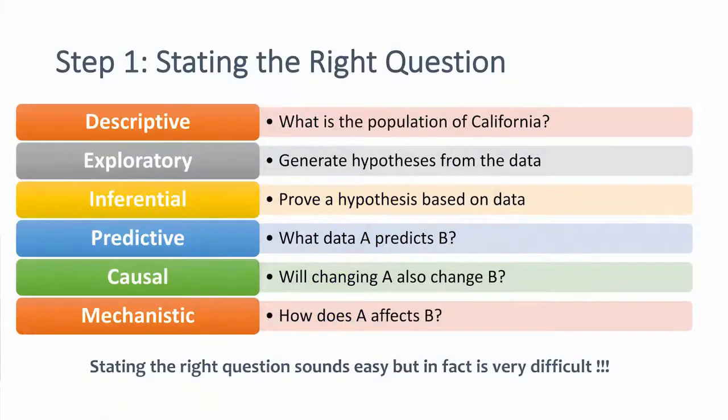The first step is stating the right question. Descriptive: what is the population of California? Exploratory: generate hypotheses from data — for example, the height of a basketball player is related to success; if he's six feet and above, he will most likely be very successful. Then you prove a hypothesis based on the data — we will discuss hypothesis testing later today. Predictive: what does data A predict about B? For example, if you have high levels of CO2 in a region, what is the effect on rising temperature or global warming? Causal: will changing A also change B? Mechanistic: how does A affect B? We will go through these examples later when Suman talks in detail about running experiments.